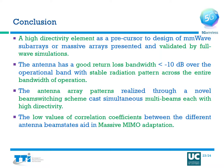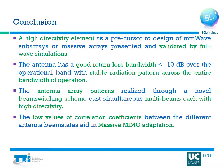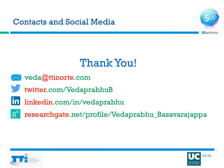In conclusion, a high directivity element as a precursor to the design of millimeter wave sub-arrays or massive arrays was presented and validated by full wave simulations. The antenna has a good return loss bandwidth of less than -10 dB over the operational band with a stable radiation pattern across the entire band. The antenna array patterns are realized through a novel beam switching scheme that casts multiple beams with high directivity, and the low values of correlation coefficients between the different antenna beam states aid in massive MIMO adaptation. This work is supported by the 5G Wireless project funded by the European Union's Horizon 2020 research and innovation program under grant agreement number 641985. Thank you very much for listening.